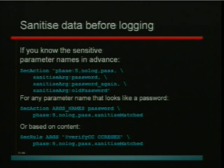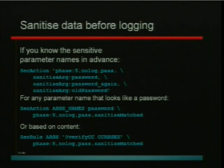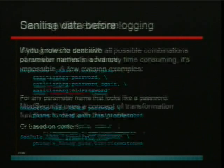Sanitizing data before logging — this is an example of what's possible. You can do it in many ways: you can do it by name if you know the parameter names in advance. In my case these are 'password', 'password again', and 'old password'. However, you can also have a rule that looks at all parameter names and if you see the word 'password' in any of the names, regardless of variation, you can sanitize it. Or you can sanitize based on content. Using the verify CC operator, we look at all parameters and verify each one to see if it's a credit card number — if it validates as a valid credit card number, we sanitize it. So you don't have to do a lot of work to implement sanitization.